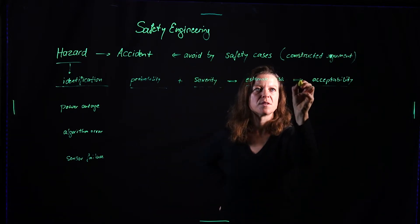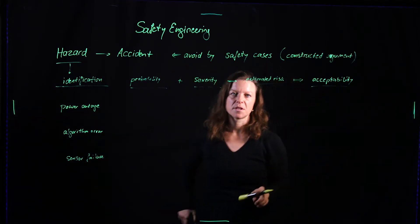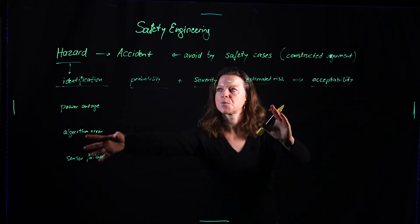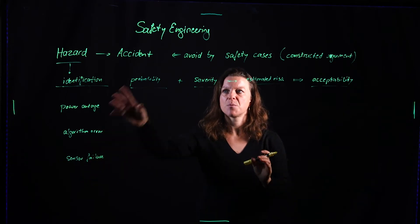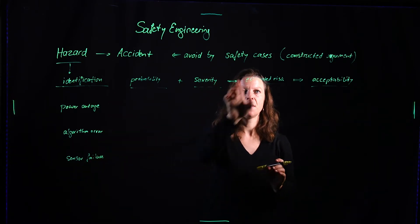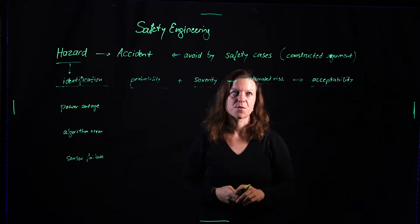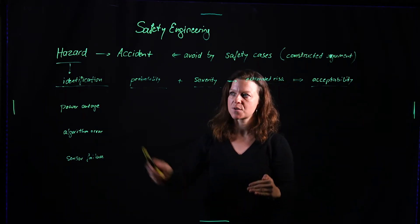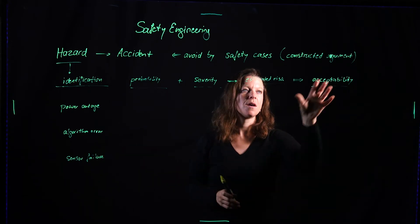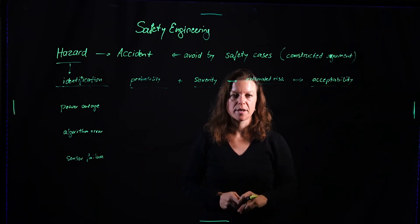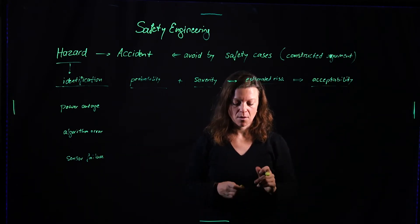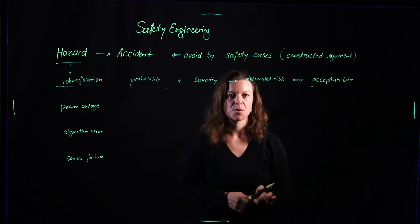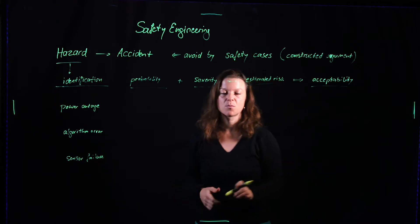From the estimated risk, you conclude what the acceptability of this happening is. Both probability and severity lead to estimated risk, and that estimated risk leads to acceptability — a decision that has to be taken by management. The analysis part is identifying the hazards, coming up with probability and severity, and then the estimated risk. You go to management and tell them these are the estimated risks for the identified hazards, and ask which are acceptable — though management may have delegated that to a safety engineer.